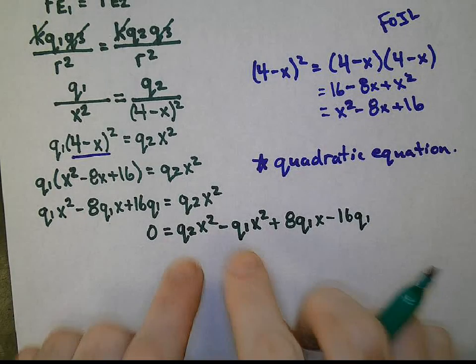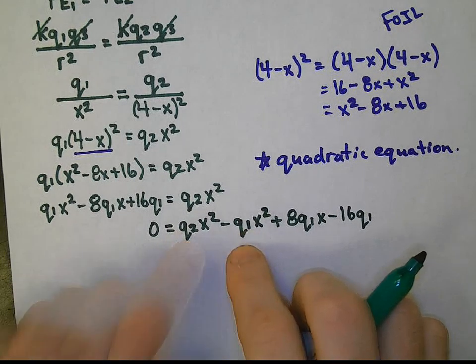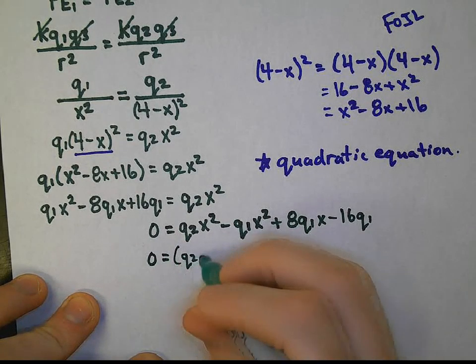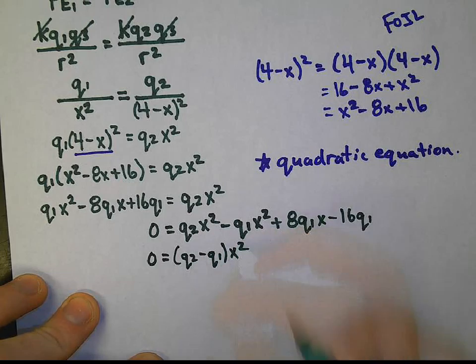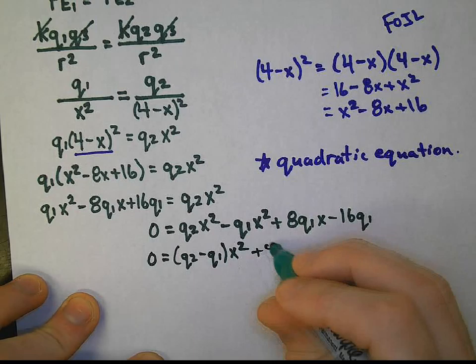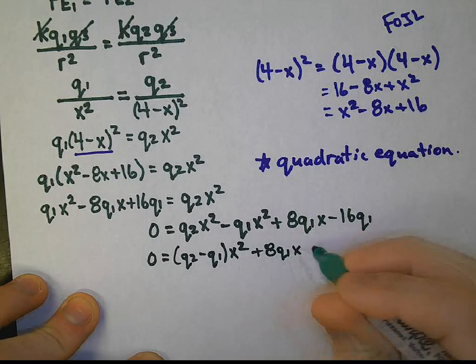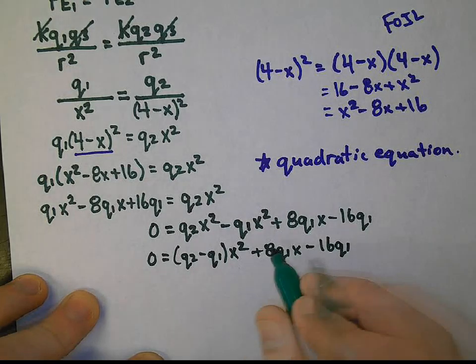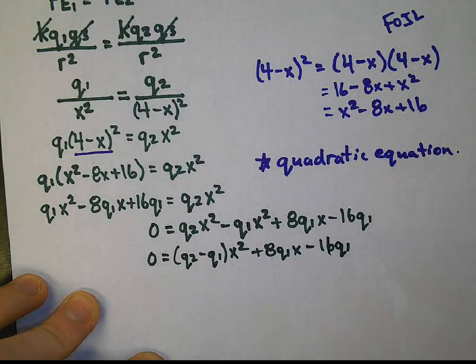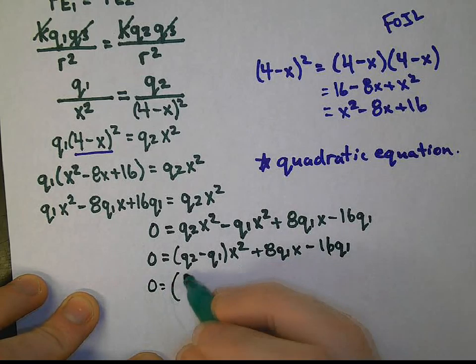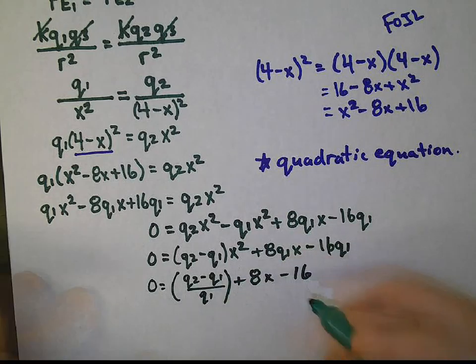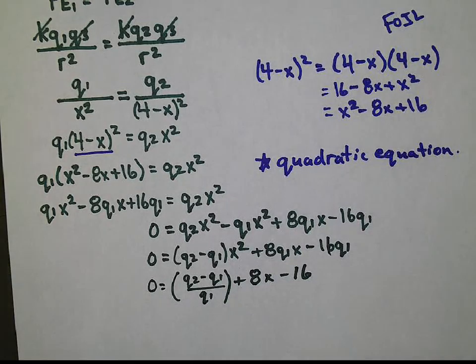So 0 equals, we'll have Q2 minus Q1 x squared plus 8q1 x minus 16q1. But we would like to make this easier on ourselves. Let's divide everything by Q1. That gives us Q2 minus Q1 all over Q1 plus 8x minus 16.